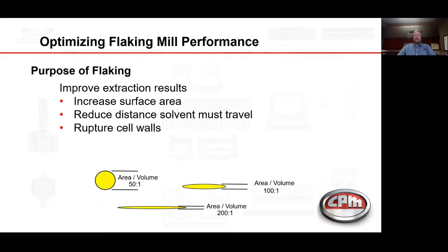Now let's discuss the purpose of flaking, which is to improve extraction results by increasing the surface area, reducing the distance solvents must travel, and rupturing cell walls. We're taking a particle that has an area-to-volume ratio of approximately 50 to 1 and reducing it to an area-to-volume ratio of approximately 200 to 1, to reduce the distance solvents must travel.